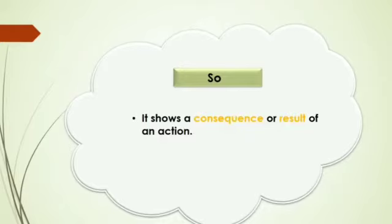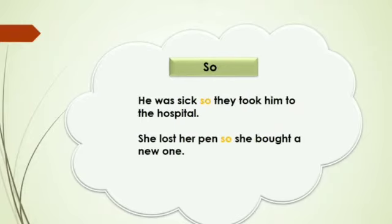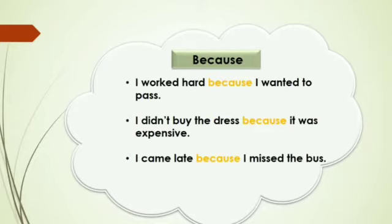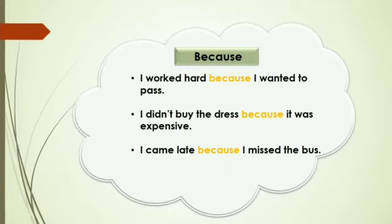The next conjunction is 'so.' The conjunction 'so' is used to show a consequence or result of an action. For example: He was sick, so they took him to the hospital. She lost her pen, so she bought a new one. The next conjunction is 'because,' which is used to show the reason or account of facts. For example: I worked hard because I wanted to pass. I didn't buy the dress because it was expensive. I came late because I missed the bus.